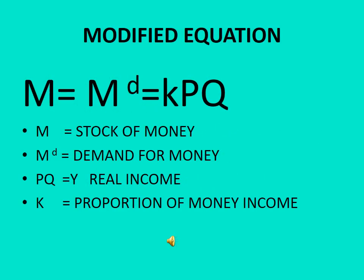Alfred Marshall and his team modified the equation to: M = Md = KPQ, where M is the stock of money, Md is the demand for money, PQ equals Y which is the real income, and K is the proportion of money income. The stock of money equals the demand for money, which equals real income multiplied by the proportion of money income.